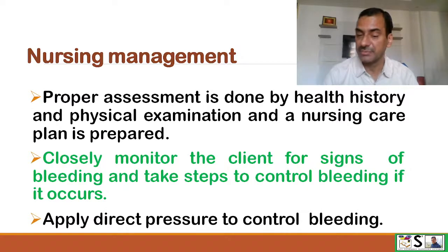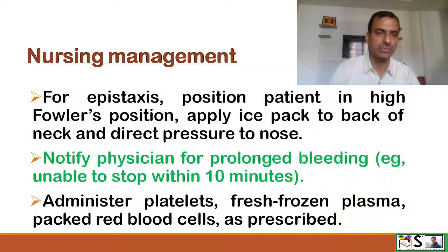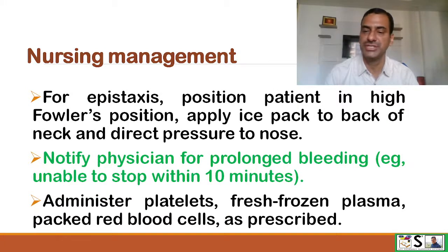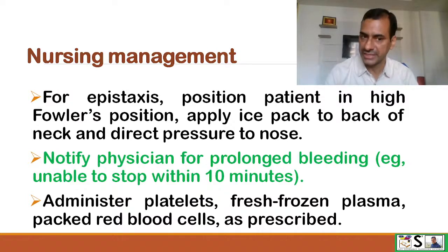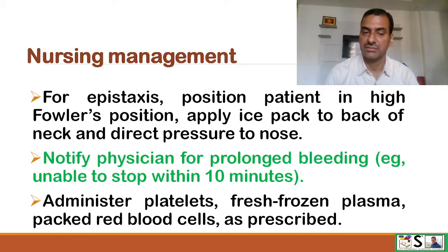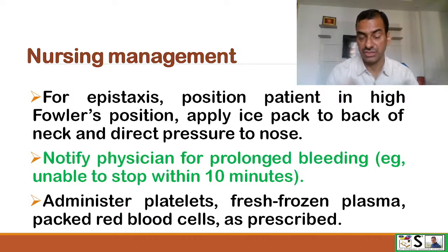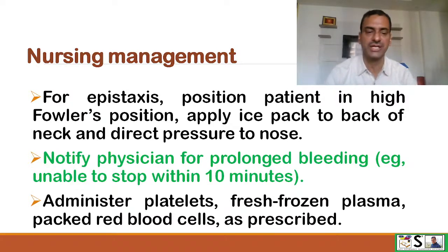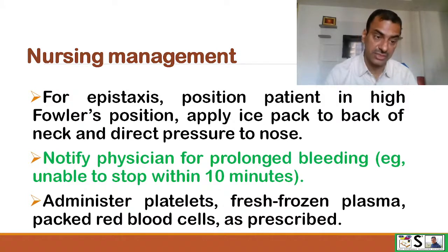Apply direct pressure to control bleeding at the point of bleeding. For epistaxis, position the patient in high Fowler's position, apply an ice pack to the back of the neck, and apply direct pressure on the nose. Notify the physician if prolonged bleeding occurs — that is, if you are unable to stop bleeding within 10 minutes. Administer platelets, fresh frozen plasma, and packed red blood cells as prescribed.